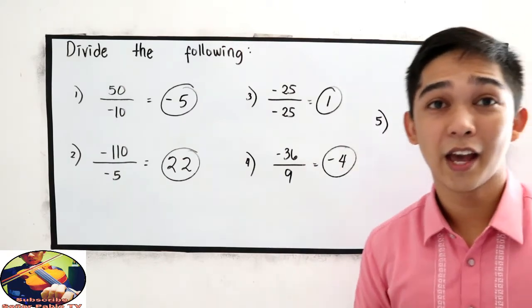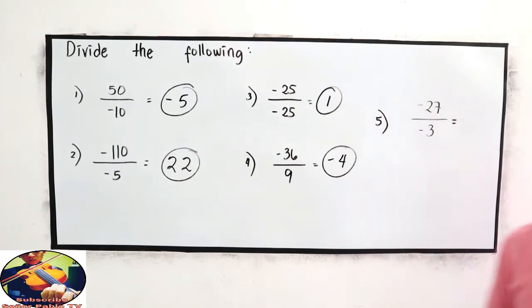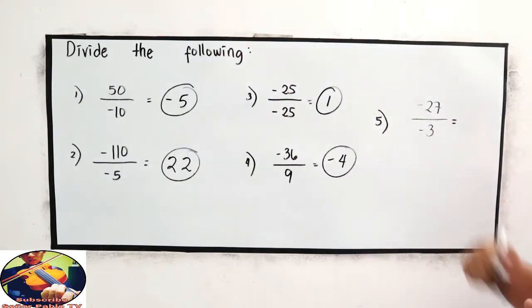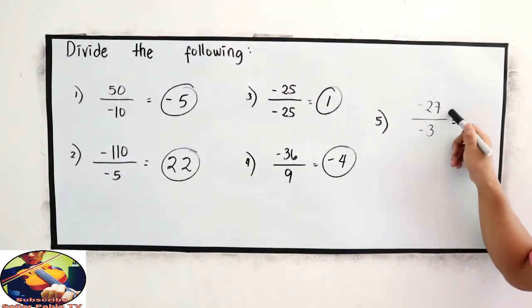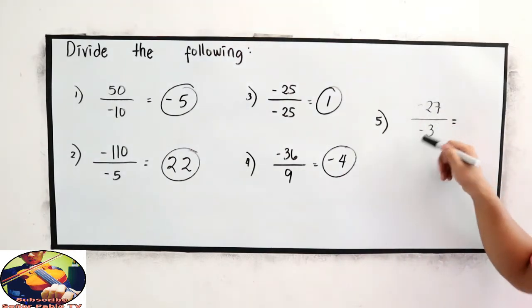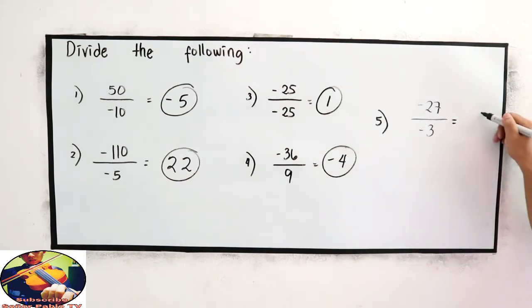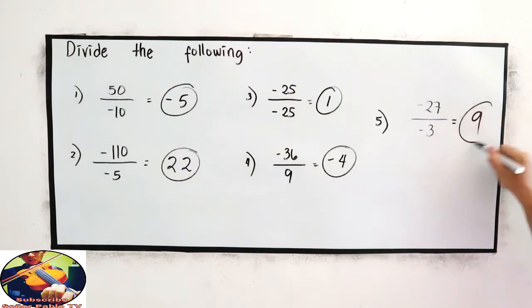And for number 5, negative 27 divided by negative 3. Like signs, so this would become positive. The answer is 9.